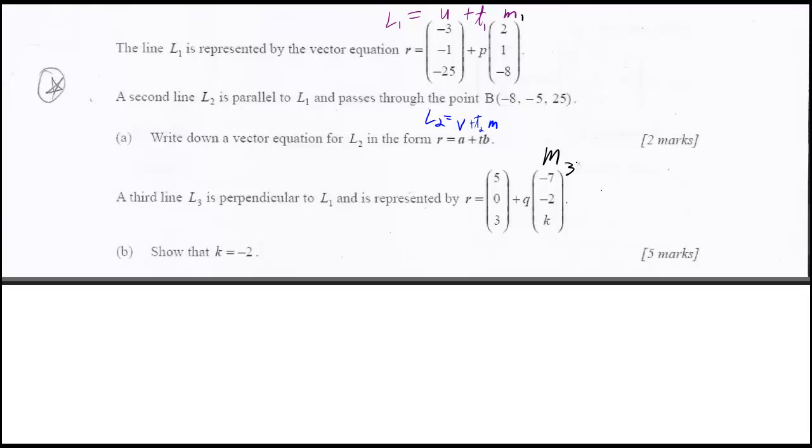And if we want to show that line 1 is going to be perpendicular to line 3, then what we've got to do is we've got to do the dot product and show that it's equal to 0. So what we have to do is show that vector M1 dotted with vector M2 is equal to 0.